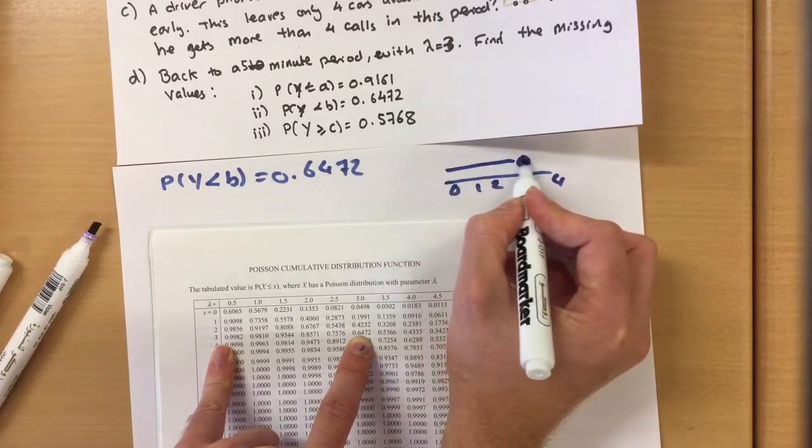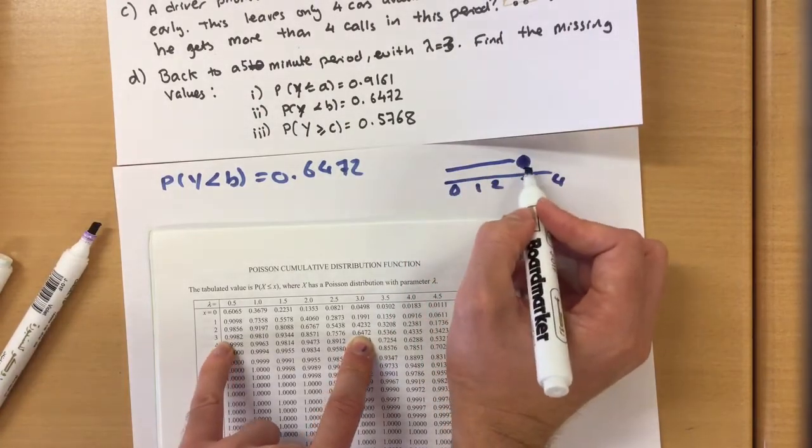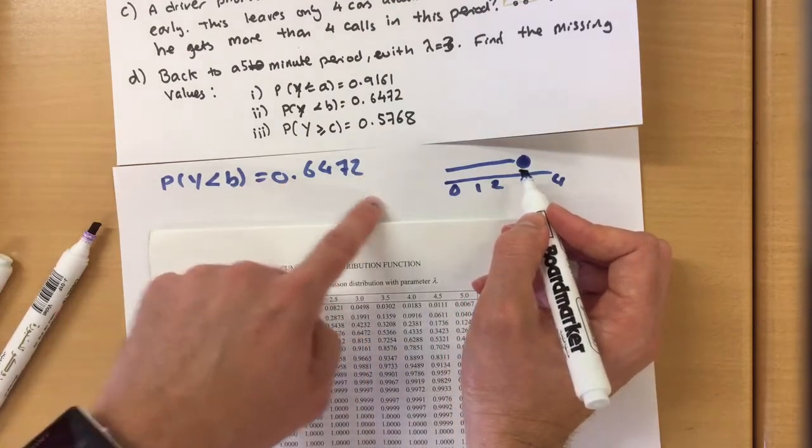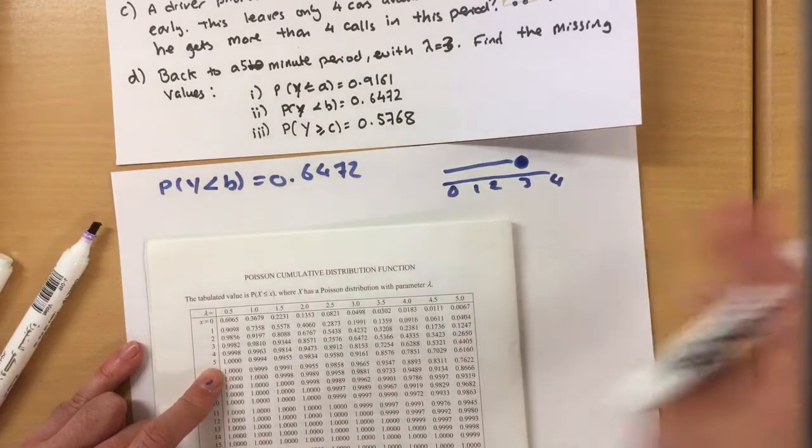It's 3. It shows us less than or equal to, so it's including the 3. Okay, so this value must include the 3, so it's a less than...